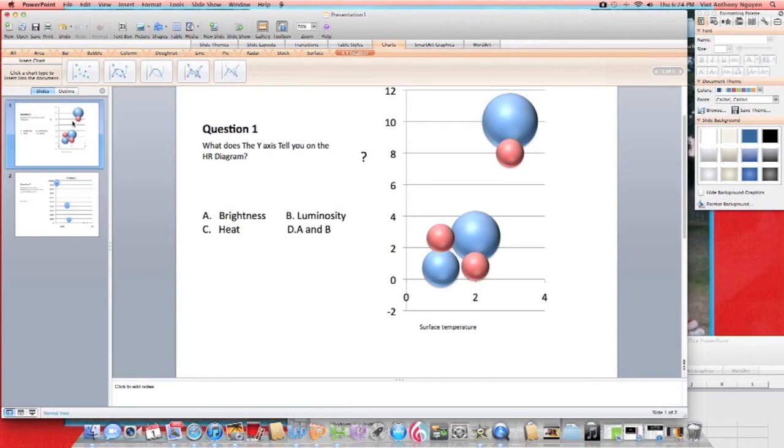Question 1. What does the Y axis tell you on the HR diagram? A. Brightness. B. Luminosity. C. Heat. D. A and B. Please pause the video now or I will announce the answer. Answer is D. Brightness and or luminosity.